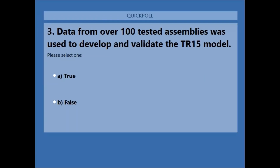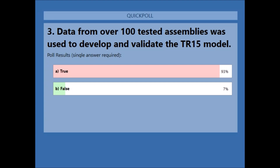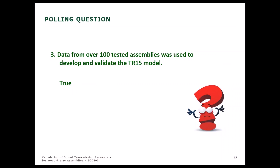Polling question: Data from over 100 tested assemblies was used to develop and validate the TR-15 model — true or false? The result was 93% answered true, which is correct. In fact, 117 assemblies were represented within the combination of the modeling database and the validation database, though some were partial assemblies.